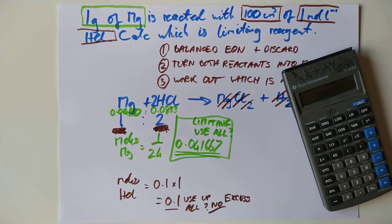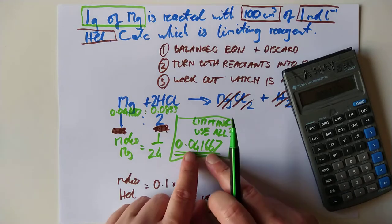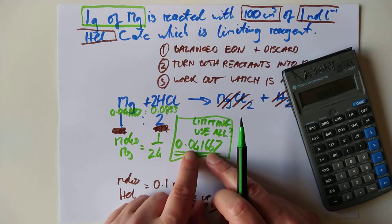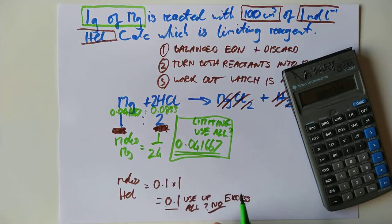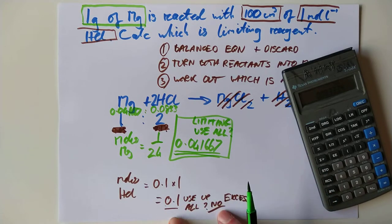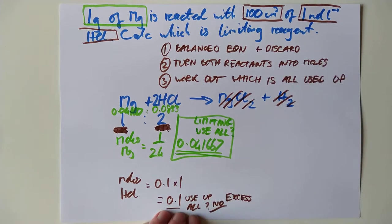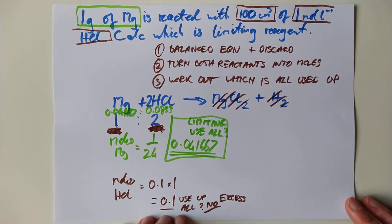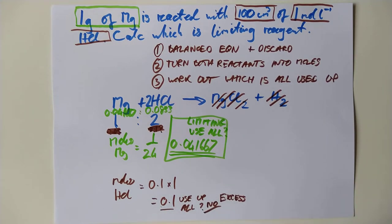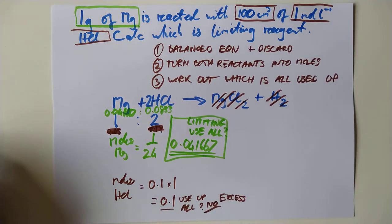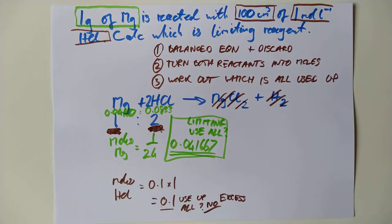It will all be burned up — either because you picked the HCl first and found you can't use it all up, meaning the magnesium is all burned up; or because you picked the magnesium first and found yes, you can use it all up. Either of these can be written in an exam question to get you all of the marks. They often say 'prove by calculation' or 'show by calculation' — and that's what we just did.